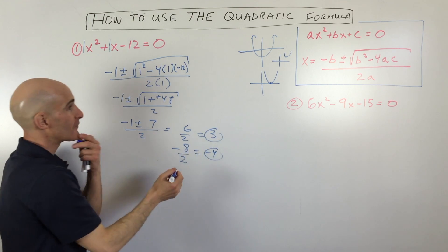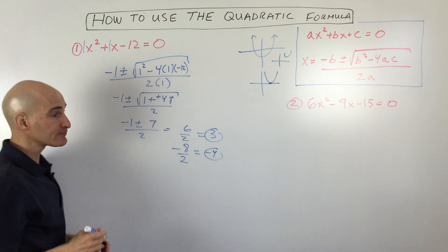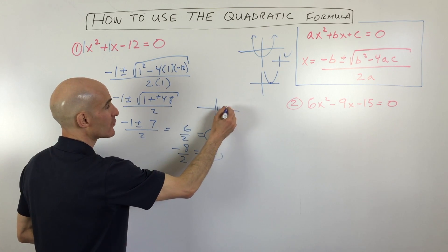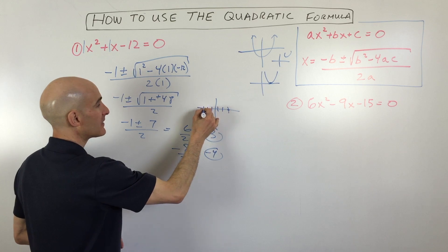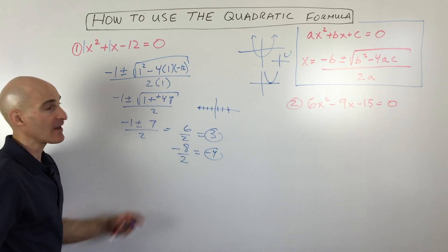So all this tells us is that if we were to graph the parabola, this quadratic is that it would cross the x-axis over here at 3 and at negative 4 like that. So it looks something like this.